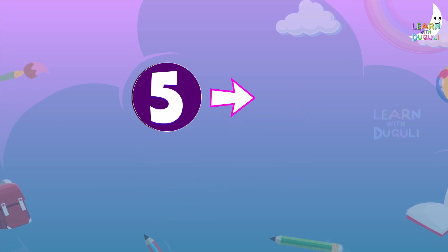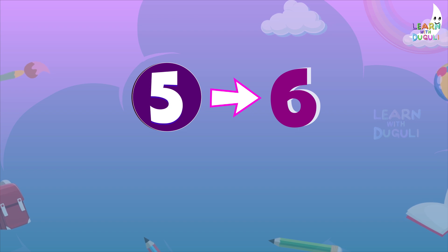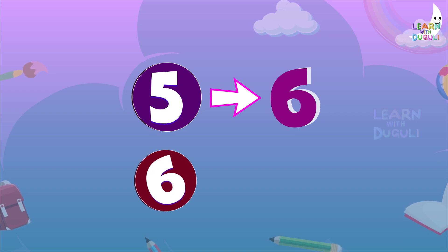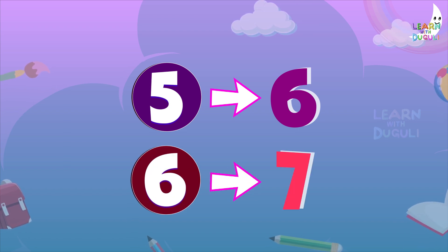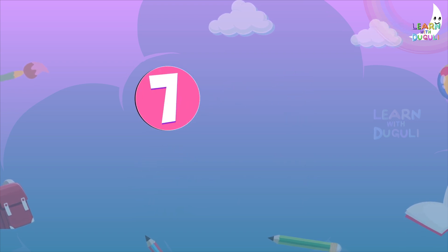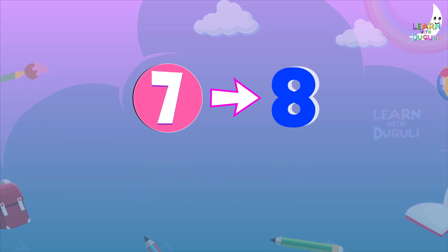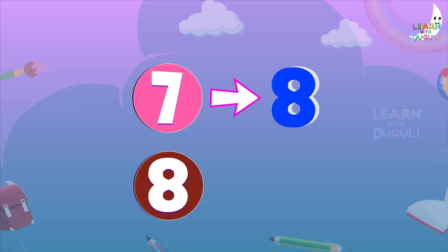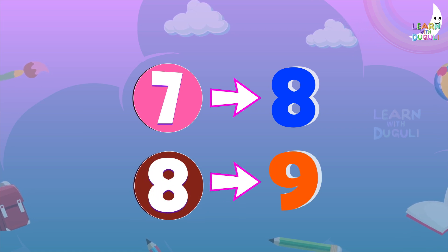Five after number is six. Six after number is seven. Seven after number is eight. Eight after number is nine.